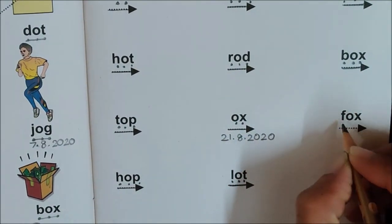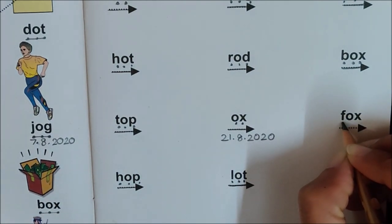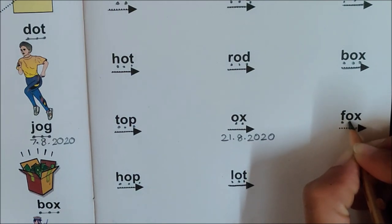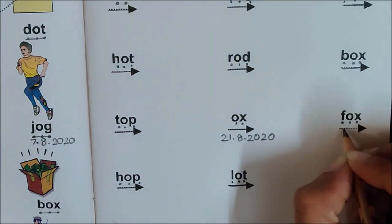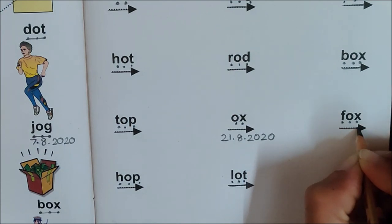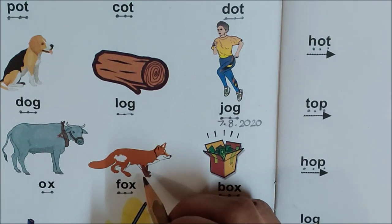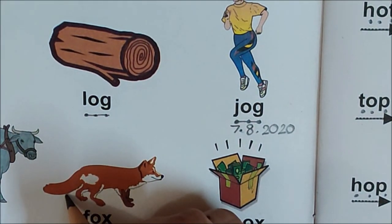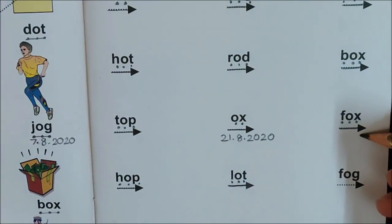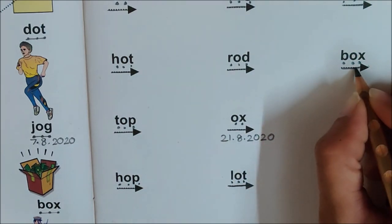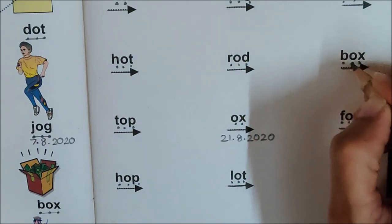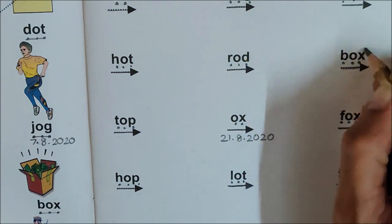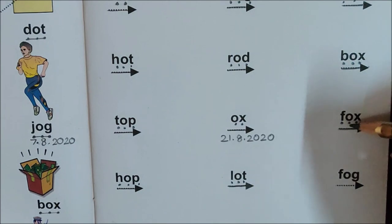Let us read the next word. What is the first sound in this word? F. So put one dot for F. What is the next sound? O. What is the last sound? X. Now let us join and read. F. O. X. Fox. F. O. X. Fox. This is a fox. Children, fox is a wild animal. Look at its bushy tail — it has a bushy tail. And children, box and fox are rhyming words because they both belong to the ox family. Ox is common — we have ox in box and ox in fox. So they both are rhyming words. Box. Fox.